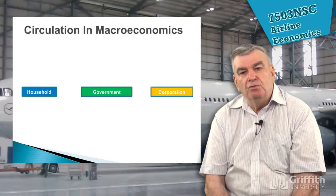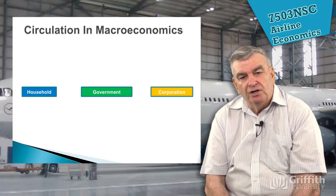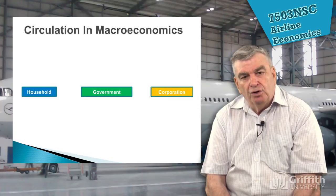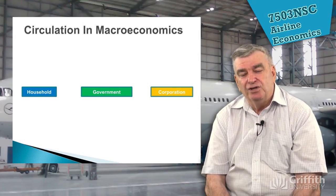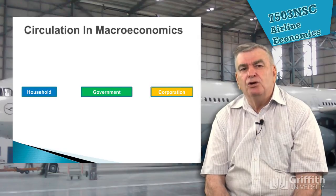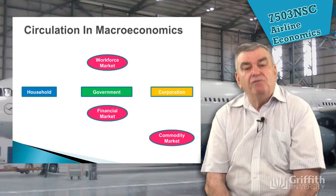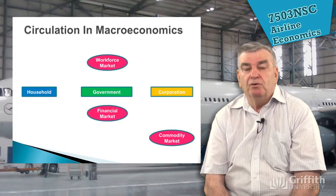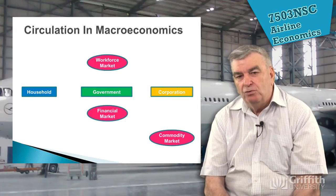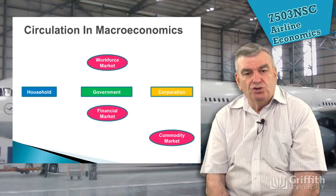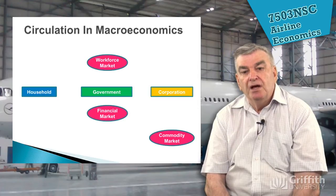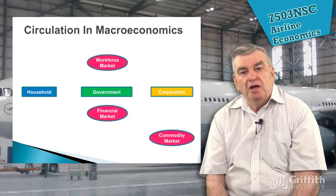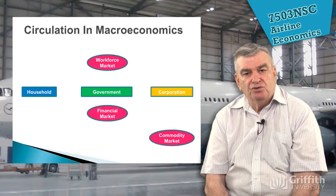In this course we're generally talking about organisations in aviation that go to earn money. Governments play a very important role in airlines because they decide who flies into and out of a country — very important when studying aviation economics. In the circular flow model we have different markets: the workforce market, the financial market such as stock exchanges where people invest their money, and the commodity market for anyone producing products or services.